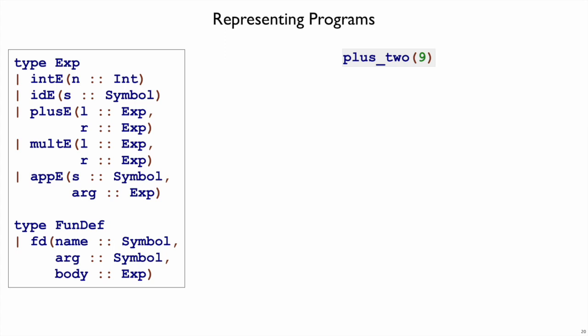What is this now? This is a function call, right? Plus 2 applied to 9. So now we're going to use app e to represent that. So we have the function name. That's the name of the function we're calling, plus 2. And then an expression for the argument.